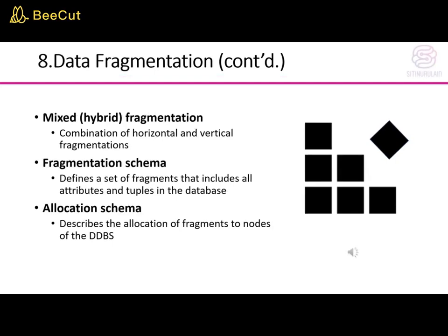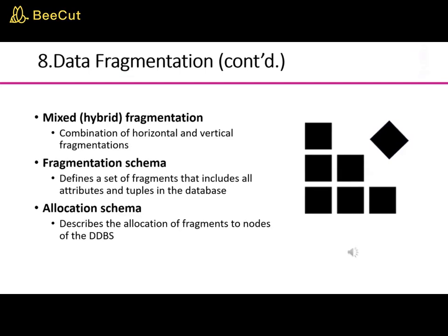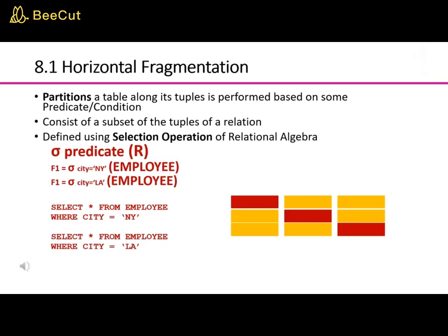Mixed or hybrid fragmentation is a combination of horizontal and vertical fragmentations. A fragmentation schema defines a set of fragments that includes all attributes and tuples in the database. An allocation schema describes the allocation of fragments to nodes of the distributed database system. In horizontal fragmentation, a table is partitioned along its tuples based on some predicate or condition, consisting of a subset of the tuples of a relation.